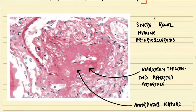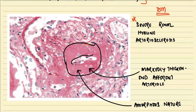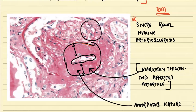Looking at the hyaline arteriosclerosis diagram, you can see deposition of hyaline material and marked thickening of the arteriolar wall with narrowing of the lumen — this is severe renal hyaline arteriosclerosis. Both the duration of hyperglycemia and the blood sugar level determine this hyaline arteriosclerotic change. Note that hyaline arteriosclerosis is not specific for diabetes mellitus; it is mainly seen in hypertension, but the process is accelerated in diabetes.